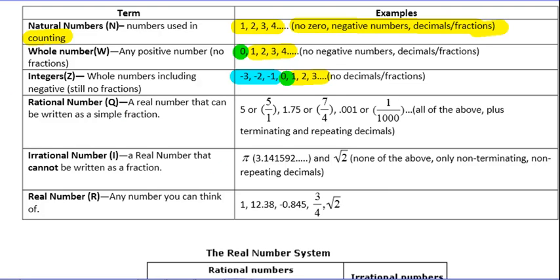Irrational numbers — I want to point this one out to you. None of the above. So none of these things are irrational.